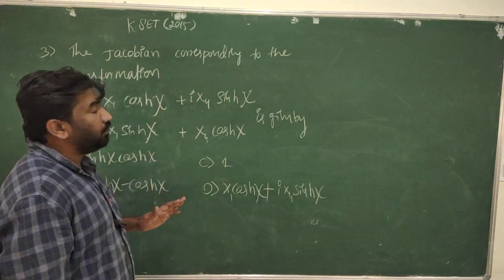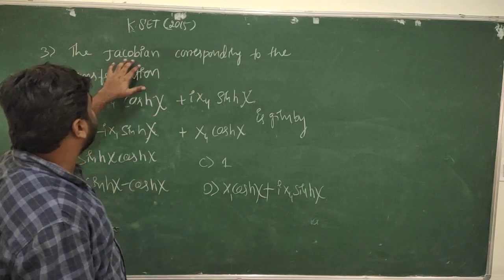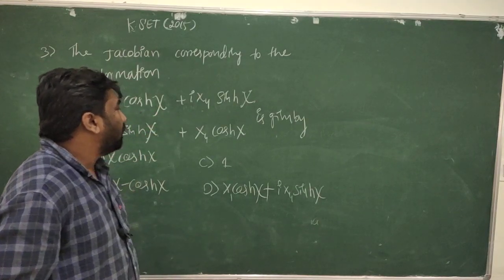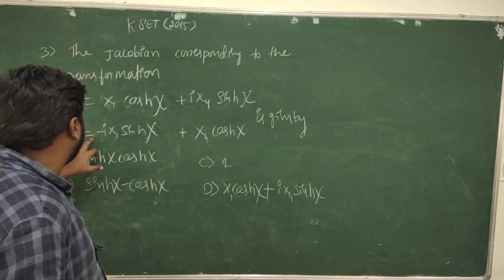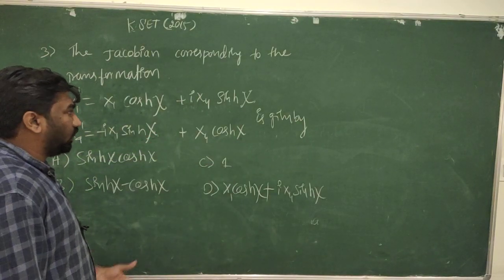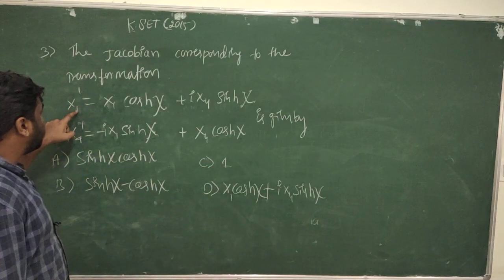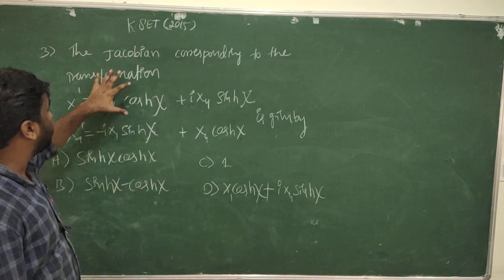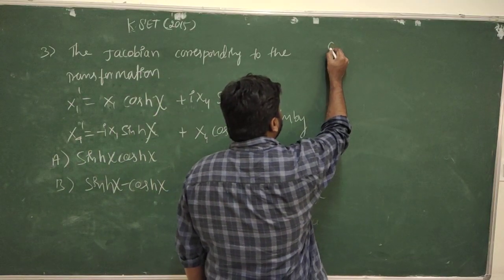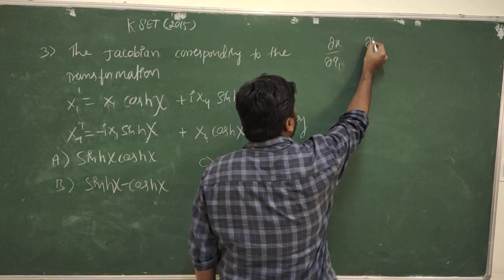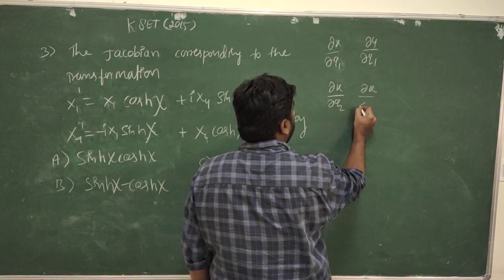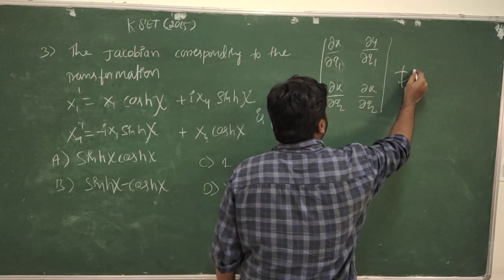Question number 3 is based on the Jacobian. The transformation is: x1 bar equals x1 cosh(χ) + i·x4 sinh(χ), and x4 bar equals -i·x1 sinh(χ) + x4 cosh(χ). We need to calculate the Jacobian of this transformation. The Jacobian for a two-dimensional case is the determinant of partial derivatives, which must not equal zero.